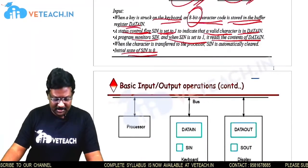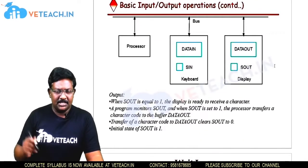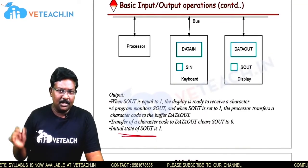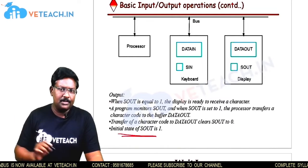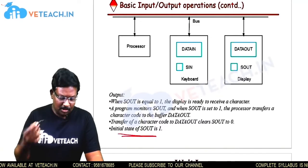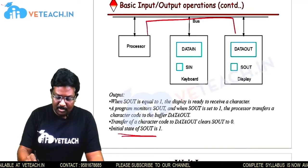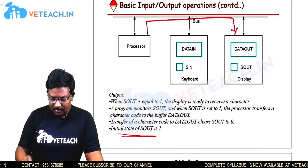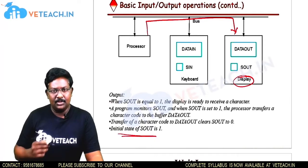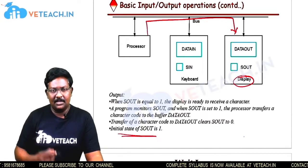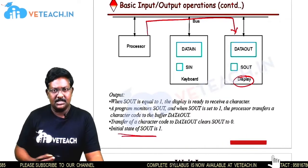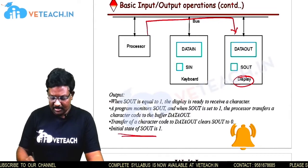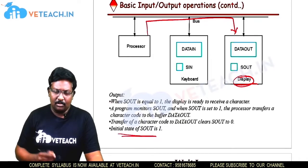For the basic output operation, initially the state of SOUT is 1. When SOUT is equal to 1, we perform the output operation from the processor to the output device. In this example the output device is a display unit. General output devices include monitors, printers, and speakers.